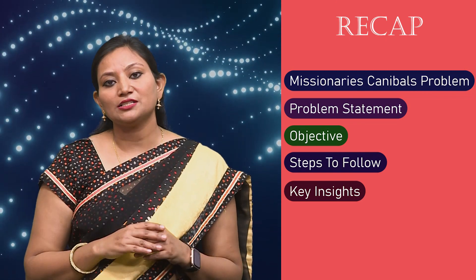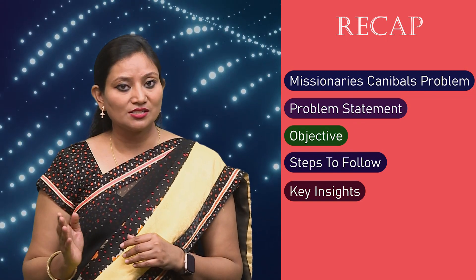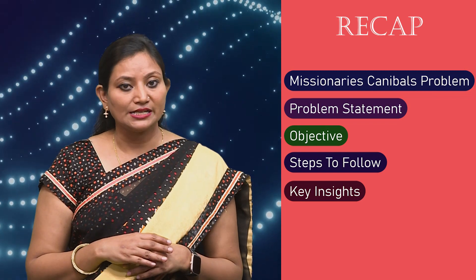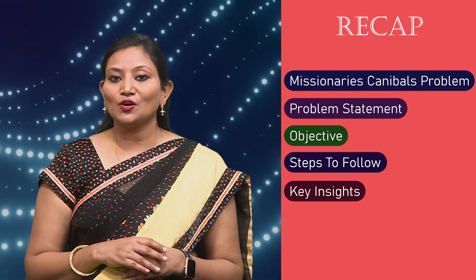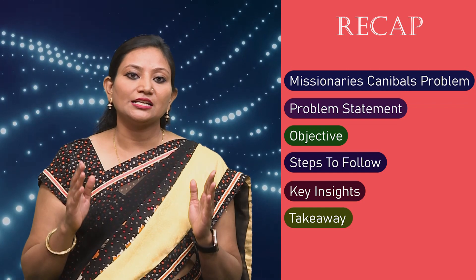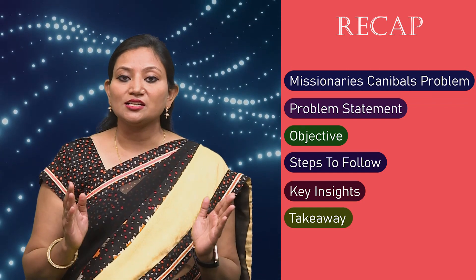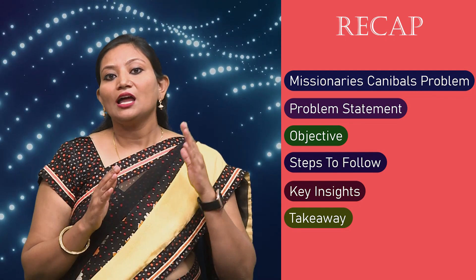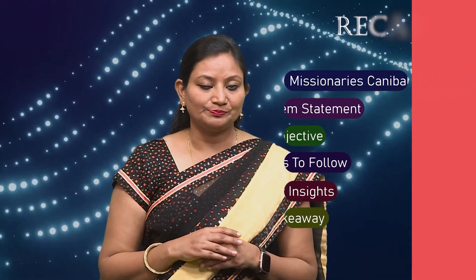The common approach to solve the puzzle is by using search algorithms such as depth-first search or breadth-first search to systematically explore possible states and find a valid sequence of moves. Our takeaway from the last lecture: the missionaries and cannibals problem serves as a classic example of a state space search problem in AI. It challenges us to think critically about solving complex puzzles while adhering to specific rules and constraints, and highlights the importance of efficient search algorithms. At the heart of many AI applications lies the need to search through vast problem spaces to find solutions, whether finding the shortest route on a map or solving puzzles.